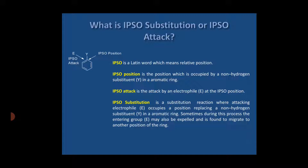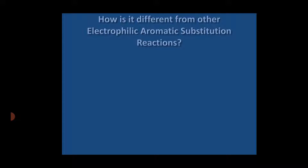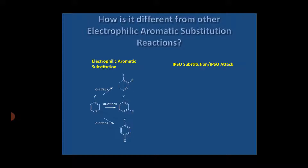Ipso substitution is a substitution reaction where the attacking electrophile occupies a position replacing a non-hydrogen substituent Y in the aromatic ring. This is different from normal electrophilic aromatic substitution, where the electrophile occupies a position ortho, meta, or para with respect to substituent Y. But in Ipso substitution, the electrophile directly replaces the substituent Y.